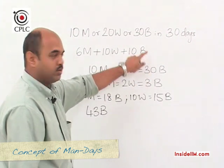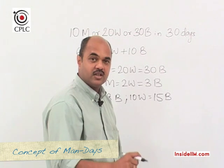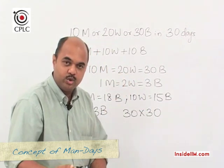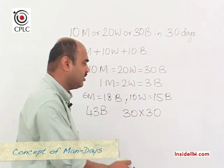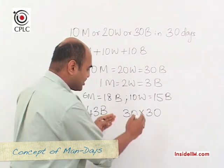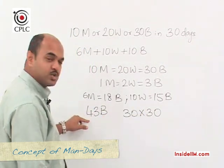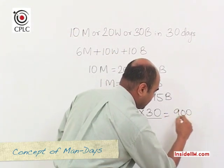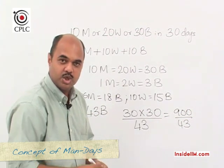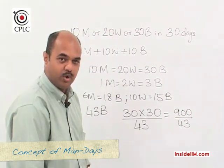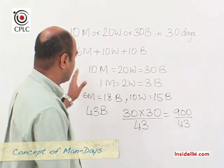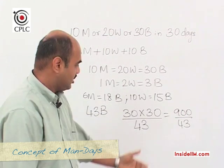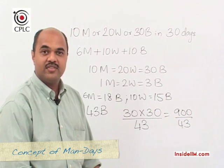When 30 boys do the work, it takes 30 days, so the total work = 30 × 30 = 900 boy-days. This is the total quantity of work to be done, and it is going to be done by 43 boys. Dividing 900 by 43 gives us 900/43 days — the same answer as before, confirming the man-days approach.